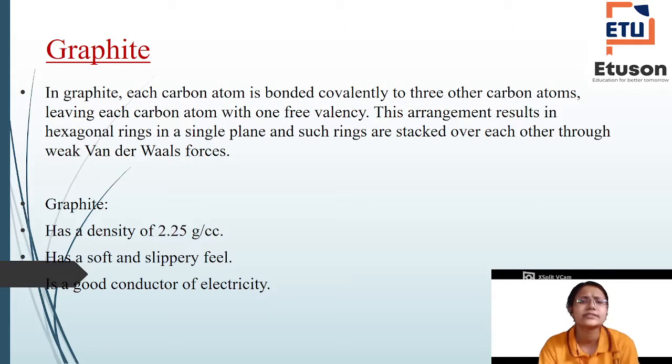Each carbon is bonded with three particular carbons. This is the arrangement. There was tetrahedral in diamond, but in graphite it is hexagonal. It is bonded with Van der Waals forces, which are weak. Its density is 2.25 grams per cc. It has a soft and slippery feel and it's a very good conductor of electricity. We all use graphite. For example, it is pencil. Pencil is a crystalline allotrope of carbon, that is graphite.